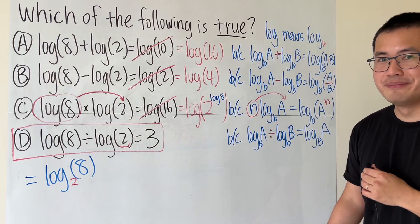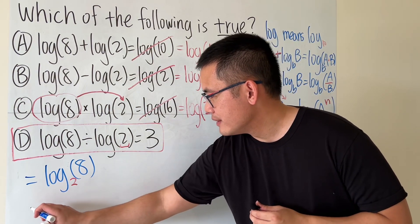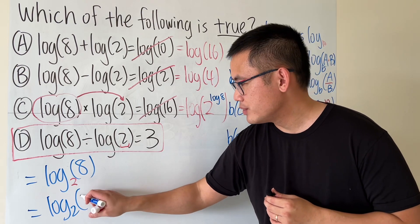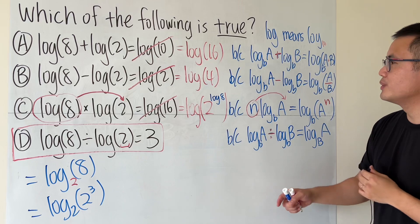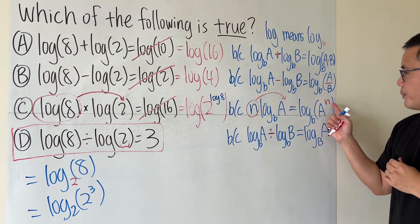Why? I'll show you. This is because we have log base 2 of 8, it's the same as 2 to the third power. For 2 to the third power, we can use this property but backwards, meaning we put the n to the front.